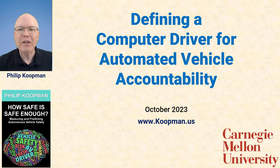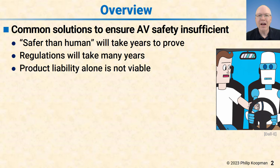This is Phil Koopman, and I'll be talking about defining a computer driver for automated vehicle accountability. Common solutions to ensuring autonomous and automated vehicles are safe are insufficient. They won't get the job done in the timescale we really need. People say they'll be safer than humans, but it will take years to prove that. Regulations will take many years to develop because equipment is very complicated and still changing. And product liability — while companies want us to pursue it as the mechanism — it's not viable, and I'll have a slide that talks about that.